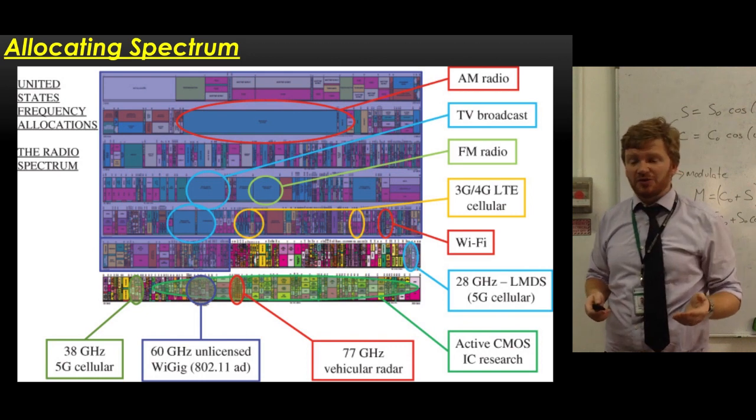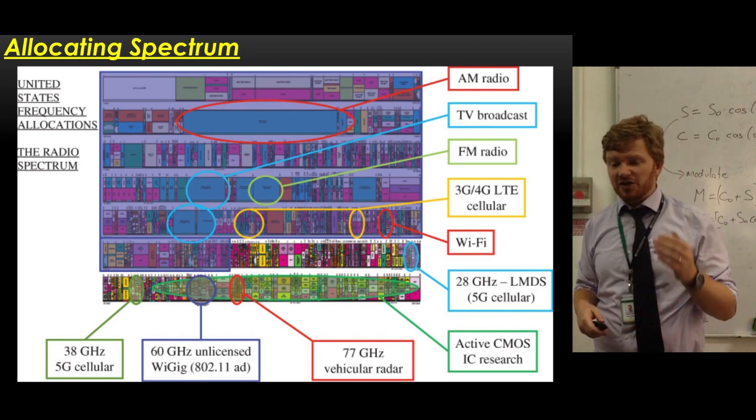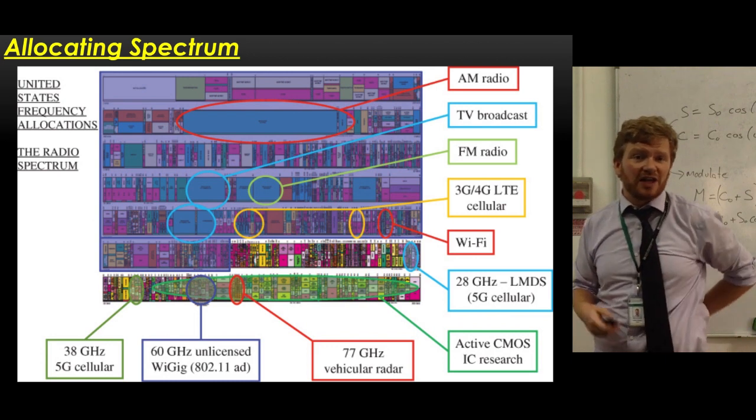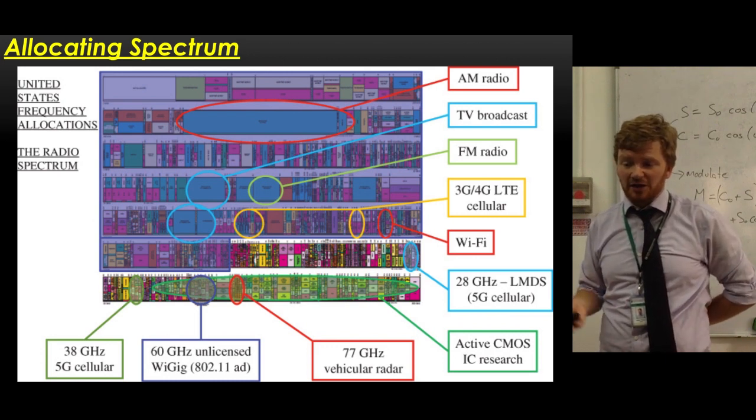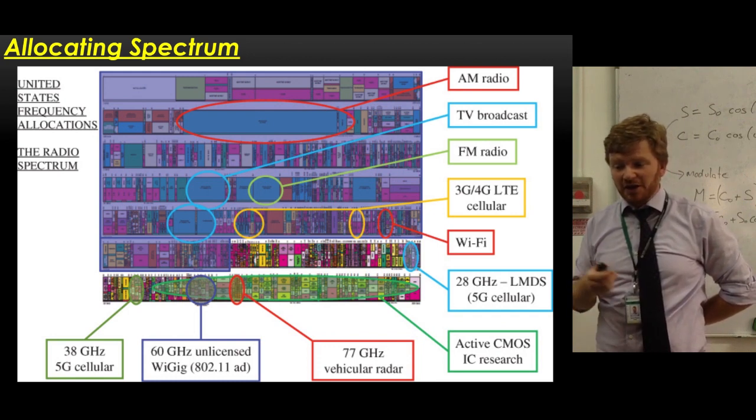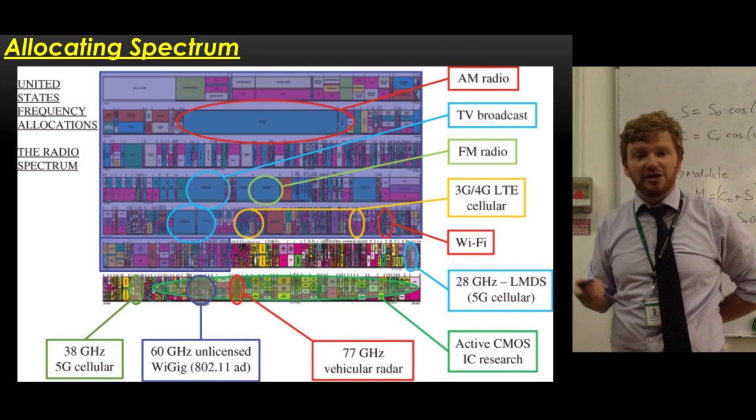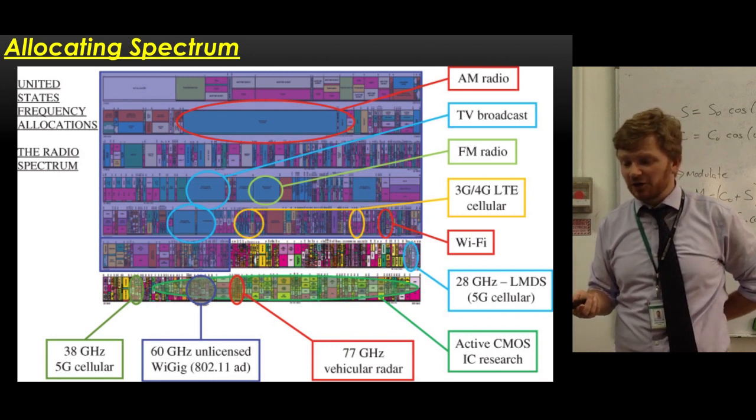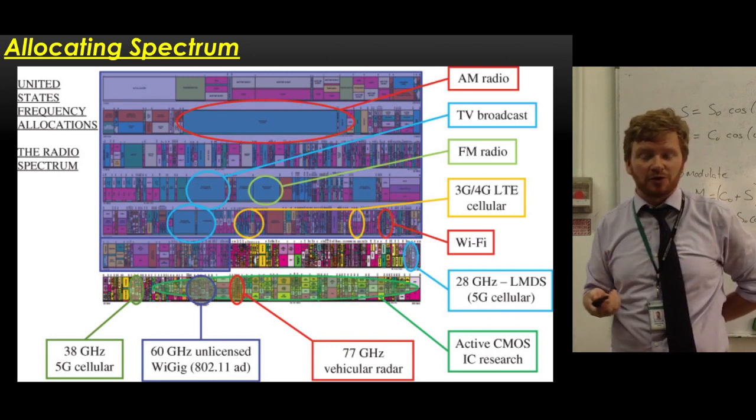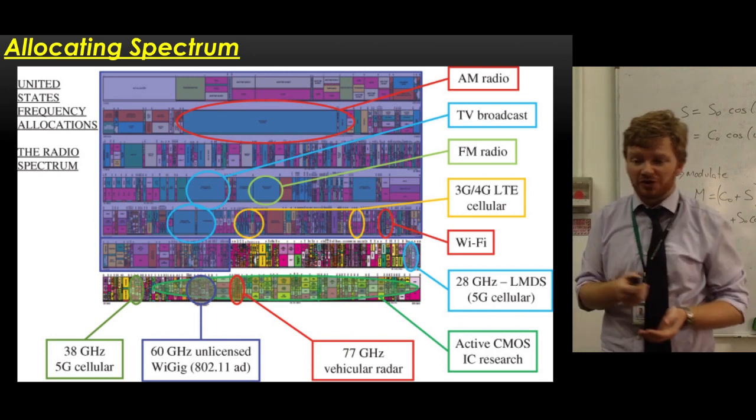Okay, so if we look at how spectrum's allocated, just a little bit that you might want to know for reference is that different bands, governments allocate to different uses. So you can see here some of the main ones. AM radio has the lowest frequency. Then it goes TV broadcast, then FM. Cellular is getting into the microwave bands along with Wi-Fi. And then we get into some particularly interesting radar applications and things that are licensed by governments so you can't broadcast on them.